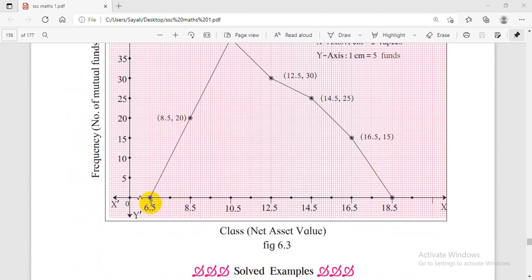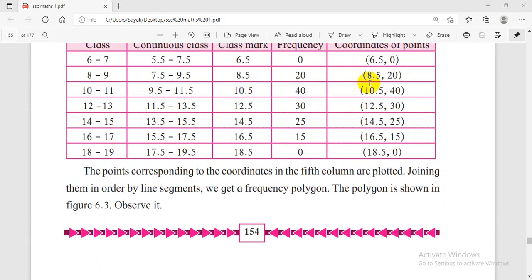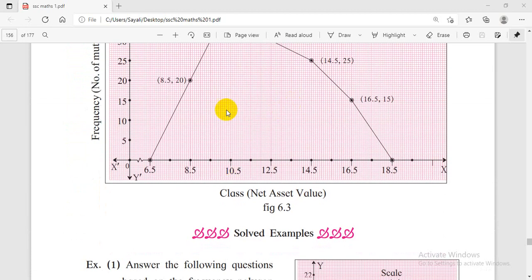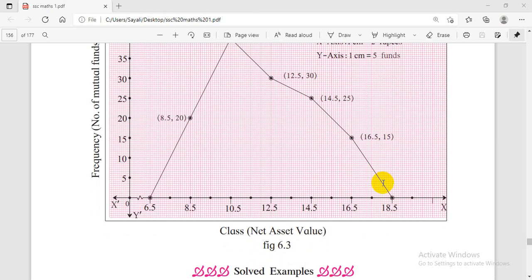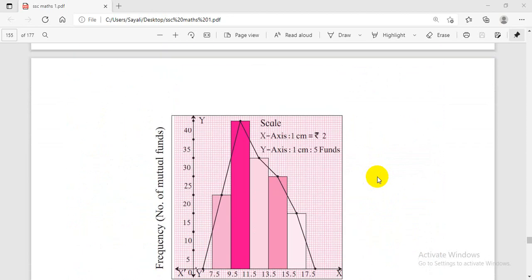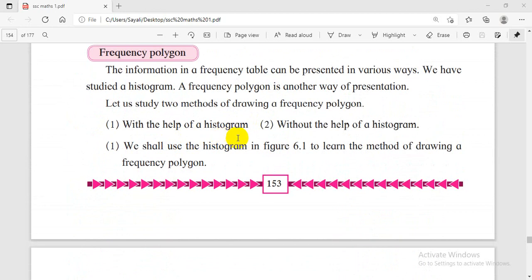The coordinates are: (5.5, 0), (6.5, 8), (7.5, 15), (8.5, 20), (9.5, 14), (10.5, 7), (11.5, 5), (12.5, 0). This is without the help of histogram.